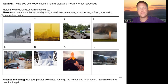So I'm going to ask what happened, and you're going to say there was an avalanche or whatever. So number one, what happened? There was a hurricane. Number two, what happened? There was a dust storm. Number three, what happened? There was an earthquake. Number four, what happened? There was a tornado.